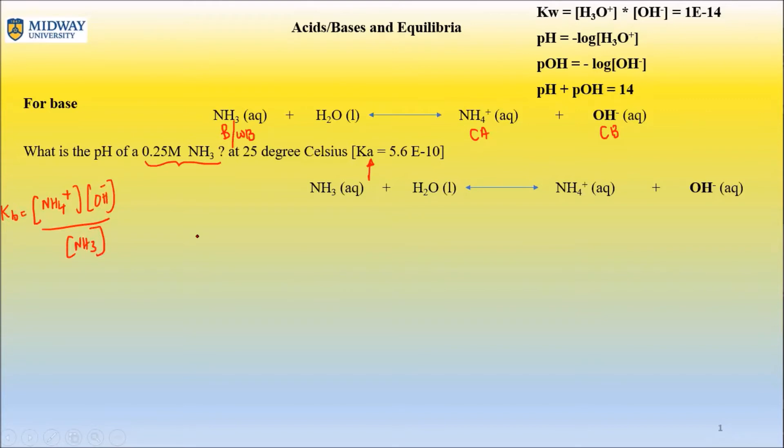So KB expression would be NH4+ times OH- over NH3. Now you know KA and KB are not the same, so you've got to first find KB. And I told you KA times KB equals 1×10^-14, something you do not have to memorize. But if the situation demands KB but you're given KA, you cannot use KA directly. It will give you a completely different answer. So you put the value of KA in the expression, KB equals 1×10^-14 divided by 5.6×10^-10.